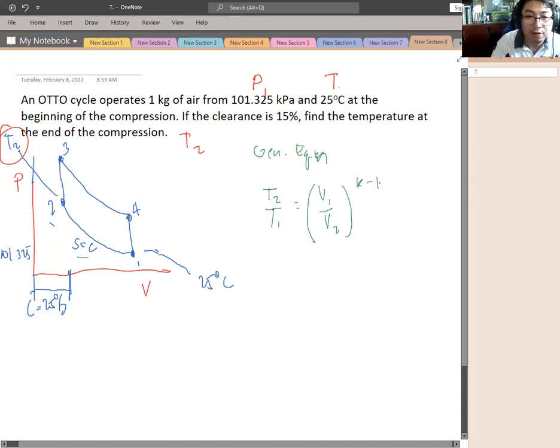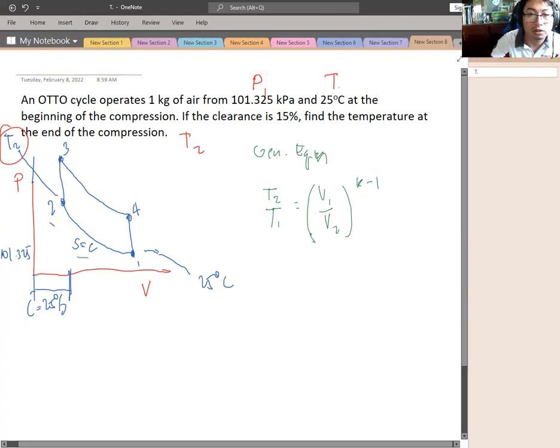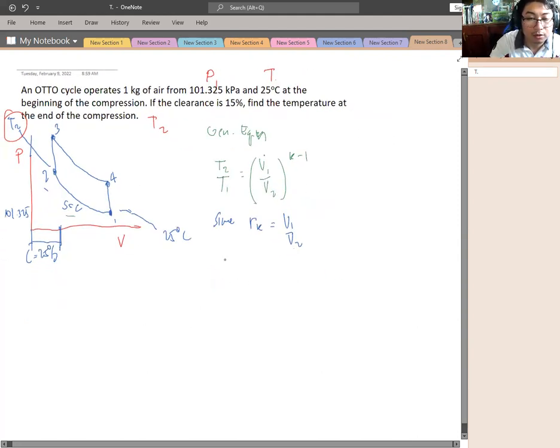We don't have the value of V1 and V2, but as you see, that is equivalent to the compression ratio. Since our RK equals to V1 all over V2, we substitute. So with our general equation, it will become P2 over P1 equals RK to the K minus 1.